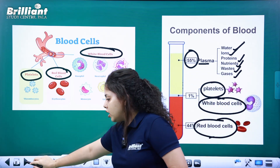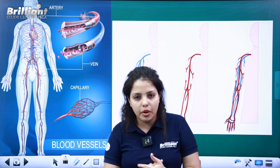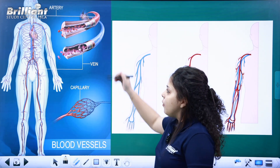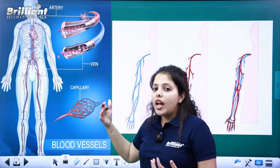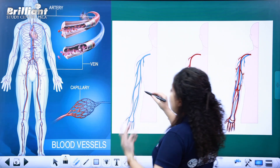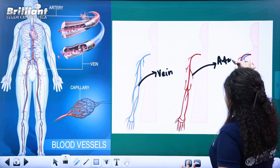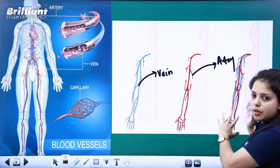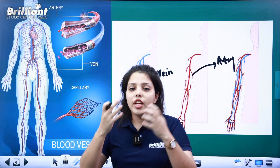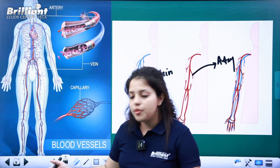Blood is flowing in blood vessels. We have three kinds of blood vessels: artery, vein, and capillaries. In artery, there is a thick wall. You can see artery and vein. When arteries and veins branch out, we have the capillaries.